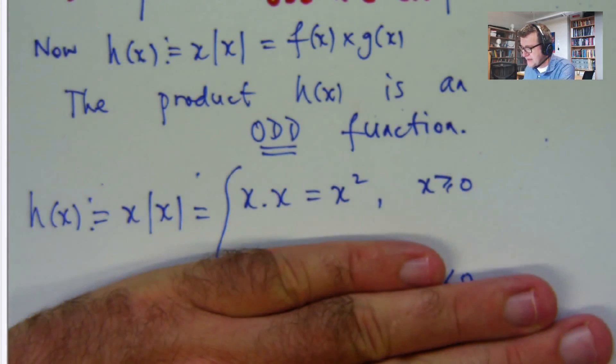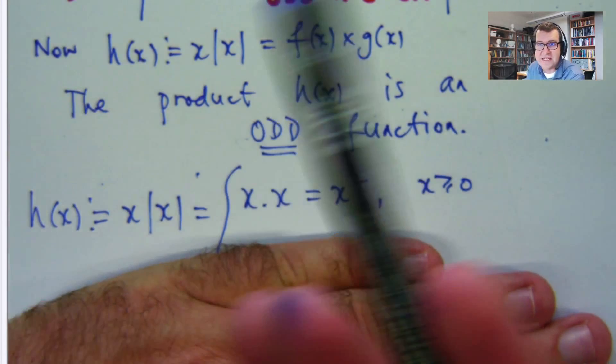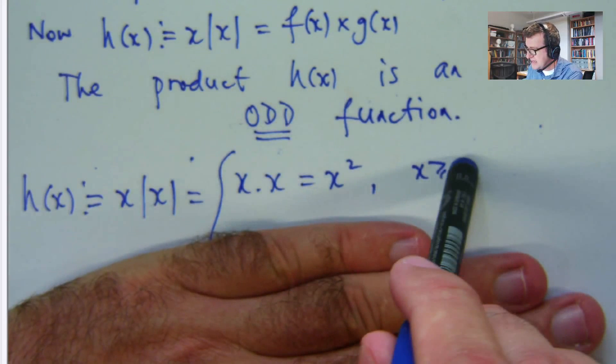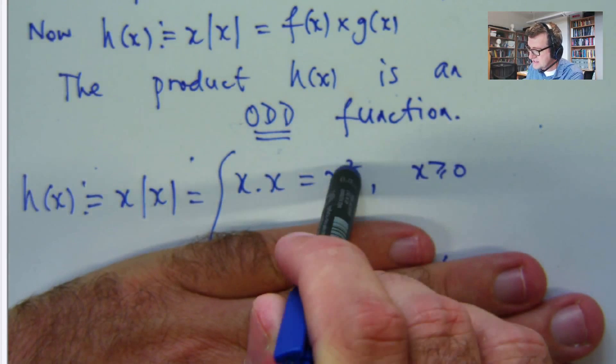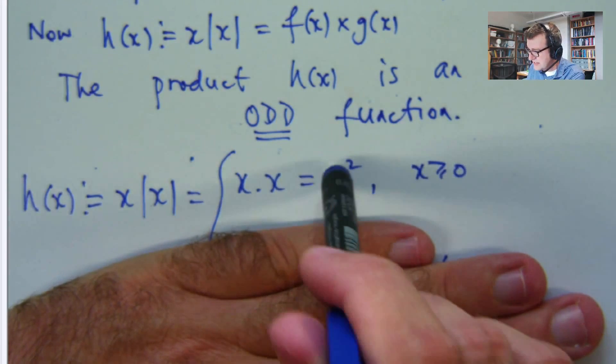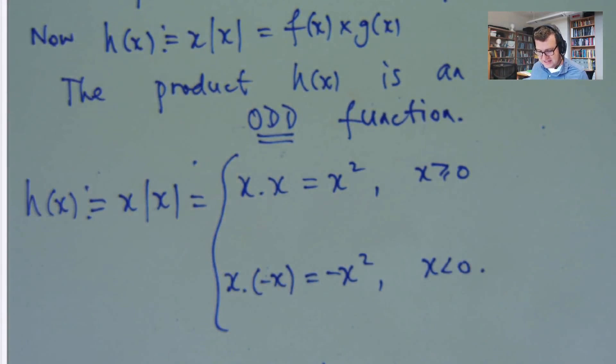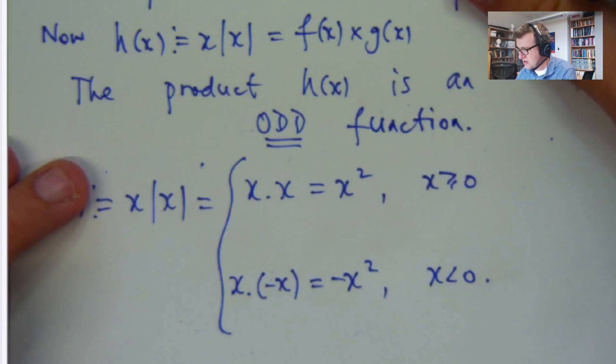Now, we don't really need this bit to sketch the function. We don't have to sketch the function, but I'm going to do it anyway. We know the function is odd, and for this part of the x axis, it's x squared. So what do we do with this x squared? We rotate it 180 degrees.